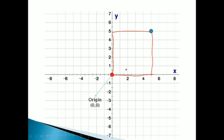Path हमारा fix रहेगा — first we will travel from origin horizontally, and then vertically। जैसे earth वाले grid में हम लोग north, south, east, west — direction से easily define कर सकते थे, but here we are just using numbers so path fix रहेगा। किसी भी point तक पहुँचना है तो पहले horizontal travel करना है और उसके बाद vertical। यहाँ पे horizontally हमने 0 से number 5 तक — यानि 5 units, towards right, इसलिए plus 5। अब plus 5 से vertically 5 units upward travel किया — so plus 5। So this point's coordinates are (5, 5)।